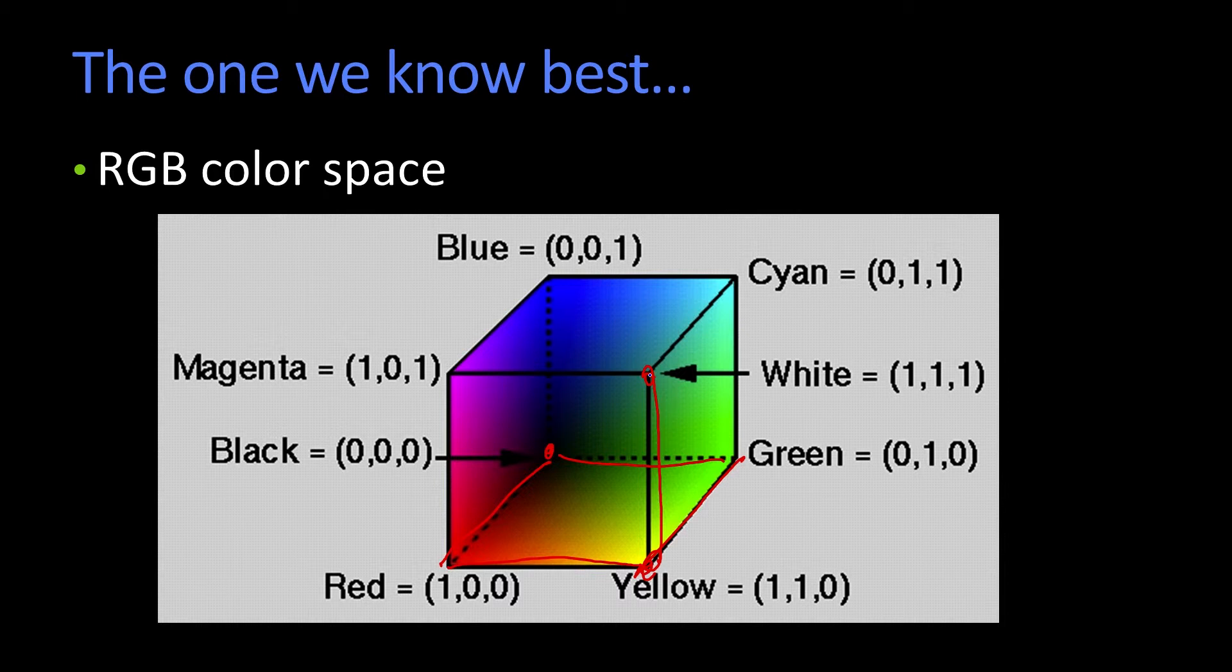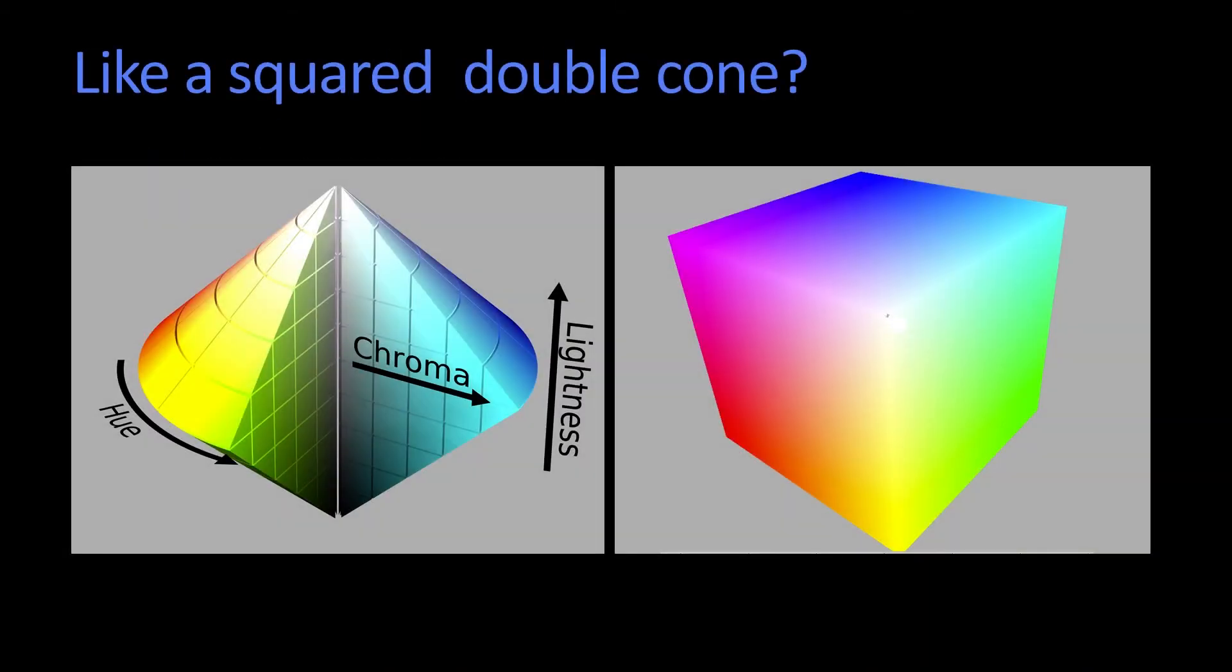And what's cool is if you take that cube and sort of pull the white corner to the top and the black corner to the bottom - in fact, I have a picture here, just think about that. It would be almost like a double cone. Not quite - it would be kind of a lumpy double cone with sharp points.